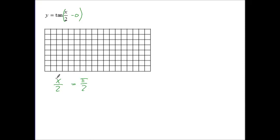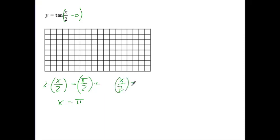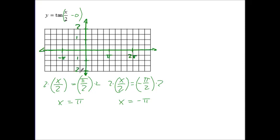We want to solve for x, and we're going to multiply both sides by 2, giving us x is equal to pi. The other equation was x over 2 is equal to negative pi over 2, and multiplying both sides by 2, x is equal to negative pi. Those are going to be our two asymptotes, so now let's set up our coordinate plane.